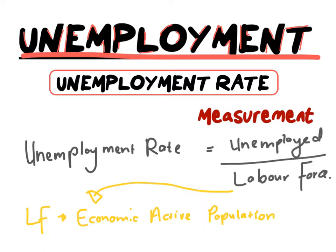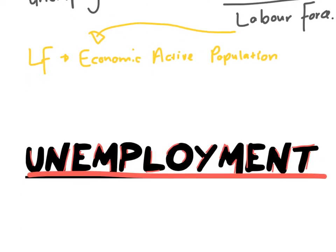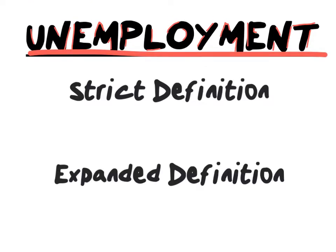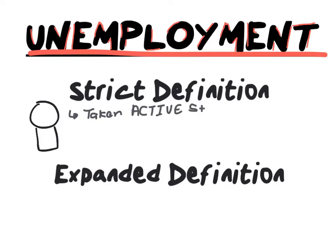But why do we so often hear that the unemployment rate is not a true depiction of the real unemployment? This depends on whether you are looking at unemployment based on the strict or expanded definition. The published unemployment rate calculates unemployment using the strict definition. Based on the strict definition, a person is unemployed when that person took active steps to look or search for employment, and this should have happened four weeks prior to the interview.